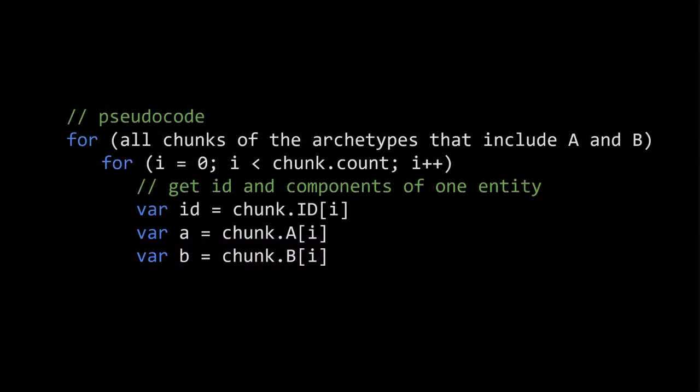Because a single chunk can only store entities of one archetype, when we change an entity's archetype by adding or removing components, the entity must be moved to a different chunk. Entities in a chunk are stored contiguously with no gaps — when one is removed, the last entity fills in the gap. This structure optimizes for scenarios where we loop through all entities with a particular set of components. While chunks may be scattered in memory, data within each chunk is tightly packed, giving near-optimal memory access as long as we access only a few components per loop.